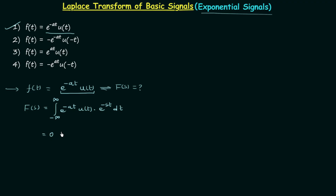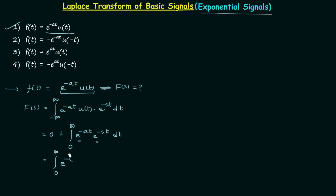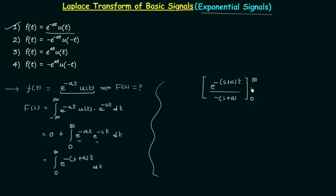From 0 to infinity, u(t) is equal to 1. So we have e^(-at) multiplied by e^(-st). Now I will combine the two exponentials and write them as a single exponential: e^(-(s+a)t). The result of integration of e^(-(s+a)t) is equal to e^(-(s+a)t) over minus(s+a), and the range of integration is from 0 to infinity. So this is equal to the bilateral Laplace transform F(s).